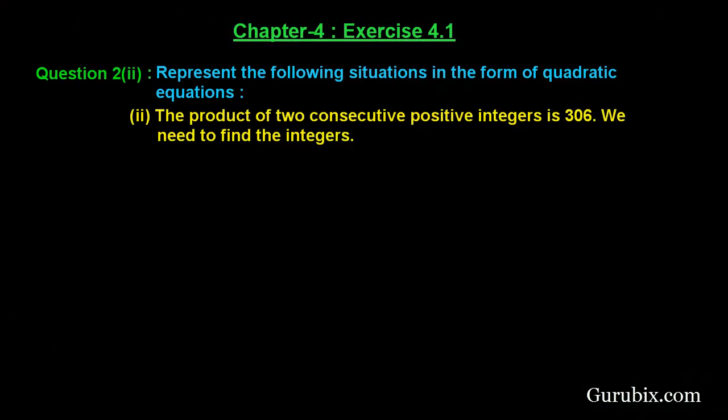Welcome friends. Here is the second part of question number 2 of exercise 4.1 of chapter 4. The question says: represent the following situation in the form of a quadratic equation. The situation is: the product of two consecutive positive integers is 306. We need to find the integers.